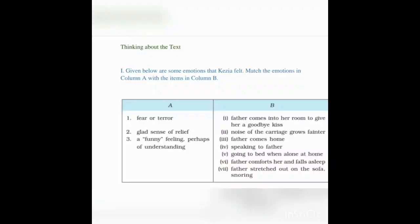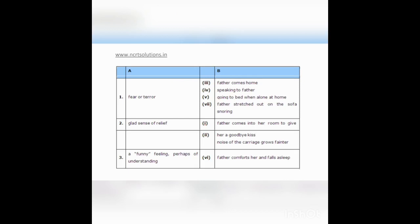Now we move to textbook question answers — Thinking About the Text. Question 1: Match the emotions in Column A with the items in Column B. First, fear or terror: Kezia was terrified when father came home, when she spoke to him, at bedtime, when alone at home, and when father stretched out on the sofa snoring. Second, glad sense of relief: Kezia was relieved when father came to give her a goodbye kiss and when the noise of the carriage grew fainter. Third, a funny feeling perhaps of understanding: when father comforts her and falls asleep, Kezia starts understanding her father.